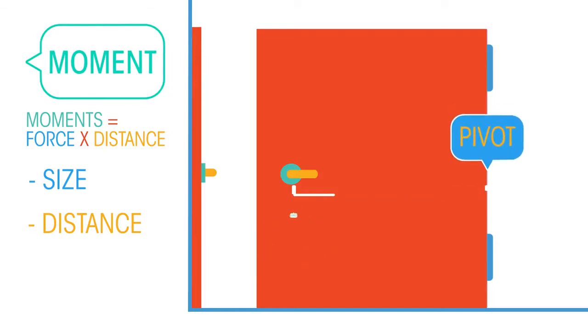This explains why a door handle is as far away as possible from the hinges in order to increase the moment of the force.